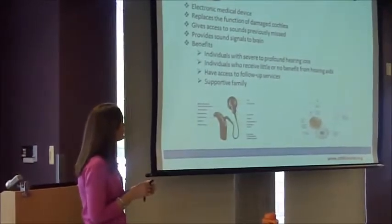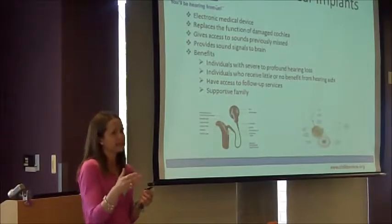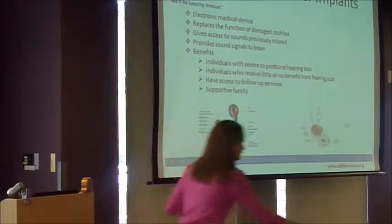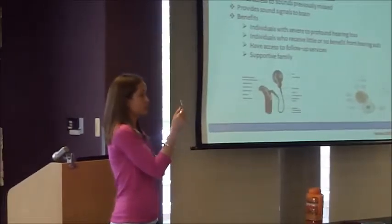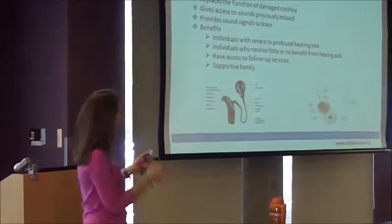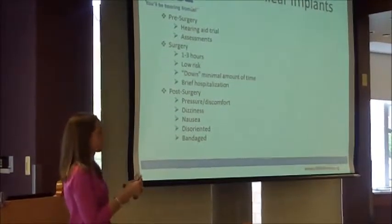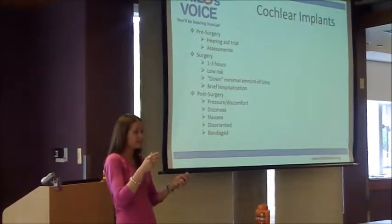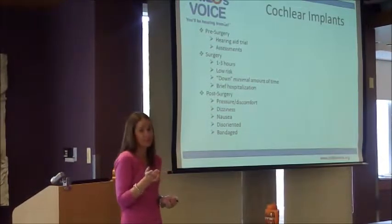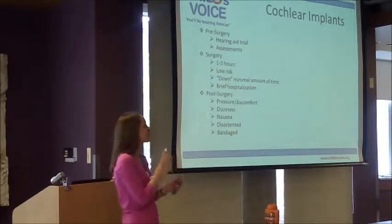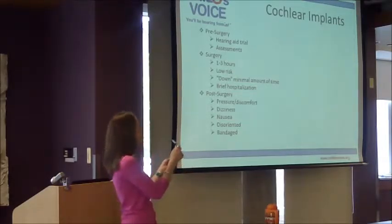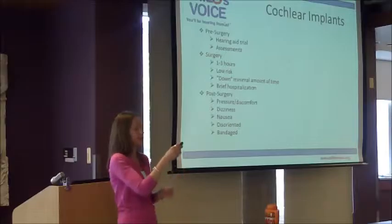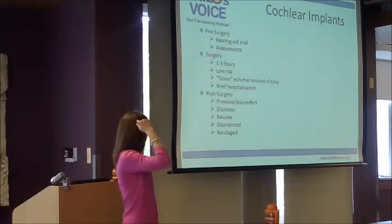The cochlear implant is an electronic medical device — it doesn't fix hearing, it takes the place of whatever was damaged. If something in the cochlea is damaged, like the hair cells, this takes its place. This is the internal piece, and it is surgically implanted. They used to cut a large section of the head, and now they do it right behind the ear — a lot of times you can't even see it unless you pull the ear back. This piece is surgically implanted behind the skin, and there is a magnet that attaches to the side of the head. In the processor there are batteries and a microphone — everything that helps that child hear is all in this little device.